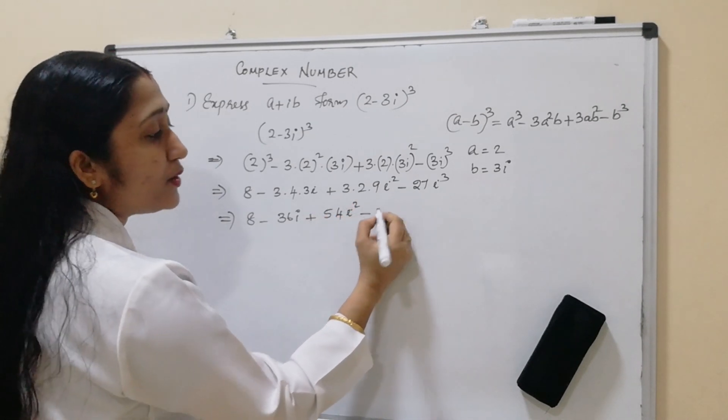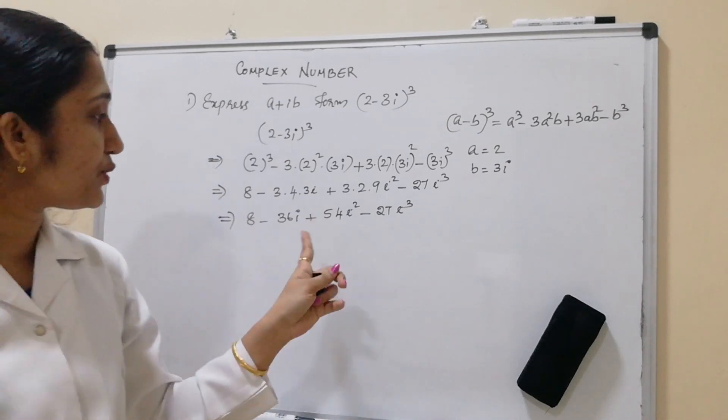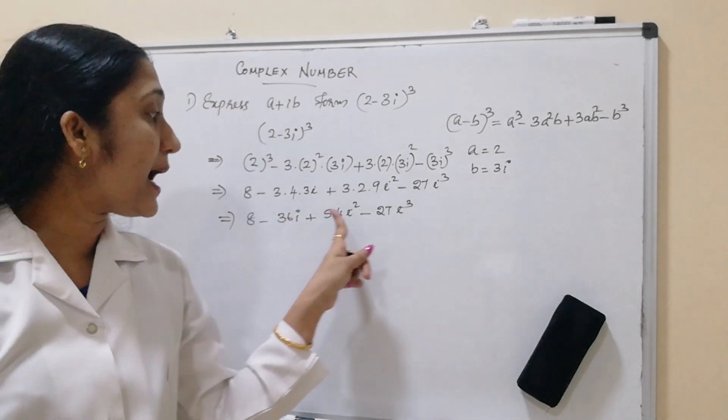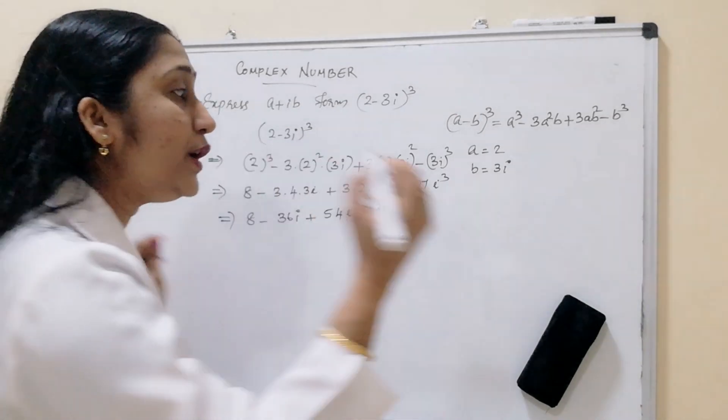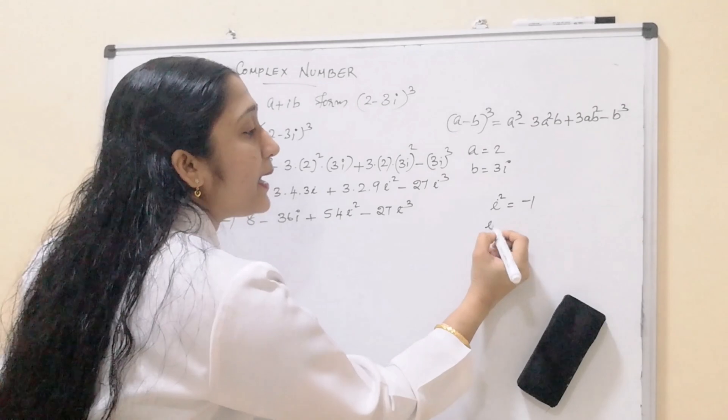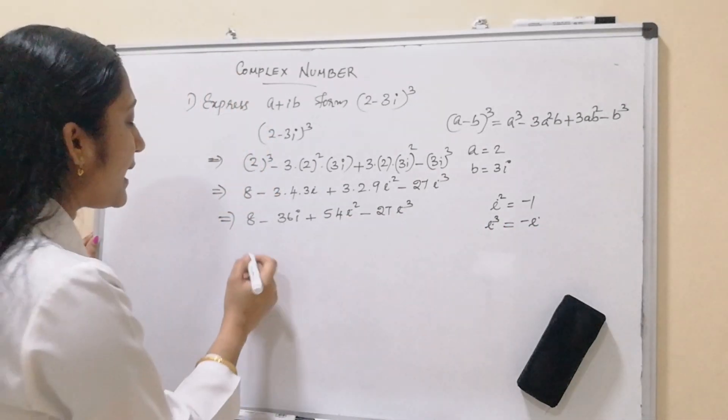So next, we have to substitute the values of i. Here i square, i cube. We know the values of i square is equal to minus 1 and i cube is equal to minus i. We have to substitute this here.